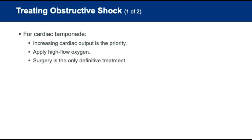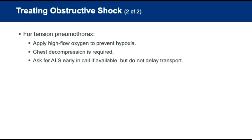For cardiac tamponade, the priority is increasing cardiac output. Provide high-flow oxygen — definitive treatment requires surgery. For tension pneumothorax, provide high-flow oxygen via non-rebreather mask to prevent hypoxia. Chest decompression is required to relieve pressure; however, that is an advanced life support skill. Request ALS assistance early in the call if available, but do not delay transport to wait for them.